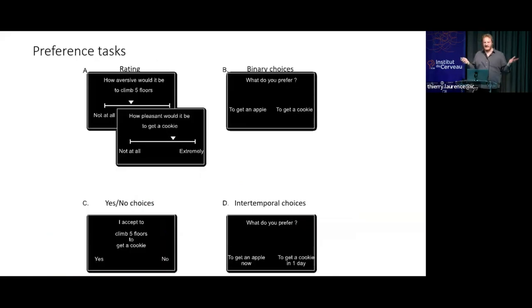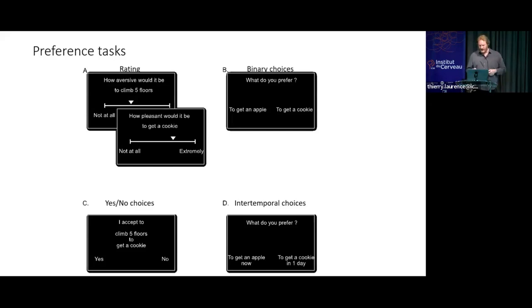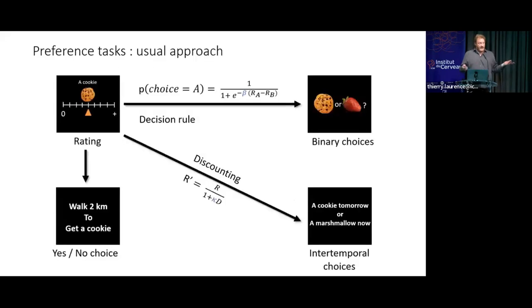First, a preference task. It's quite a simple task in which you ask a participant to rate different kinds of items — reward, effort, and punishment items — to what extent they're aversive or pleasant. You ask them to make some binary choices between different kinds of reward or effort. You ask them to make compromises — for example, would you accept to climb five floors to get a cookie? — and intertemporal choices: would you prefer a smaller reward now or a bigger reward later, with equivalents for effort and punishment.